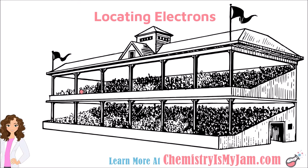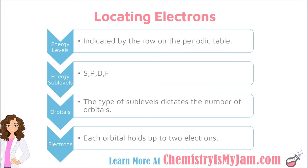The same is true for electrons. When we are locating electrons, we will go through four different levels. The first level is the energy level, indicated by the row on the periodic table. So if an element is in the third row down, you should expect electrons in the first three energy levels. Within those energy levels are sublevels called S, P, D, and F.